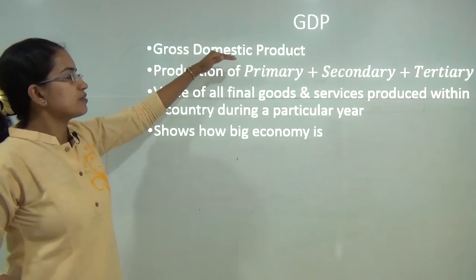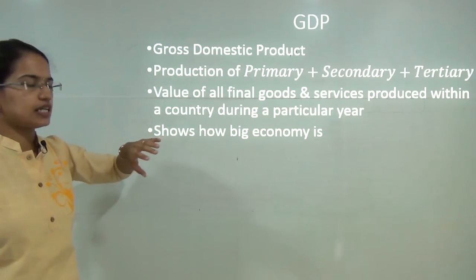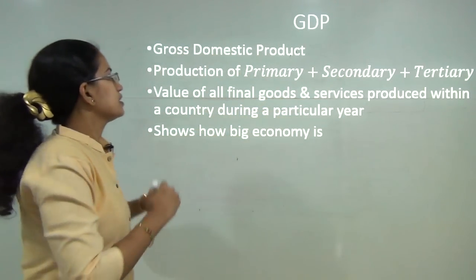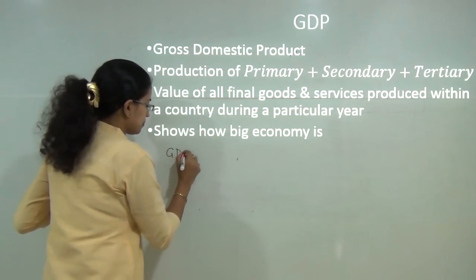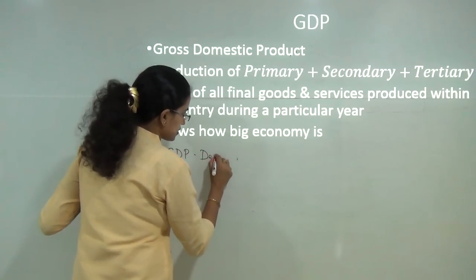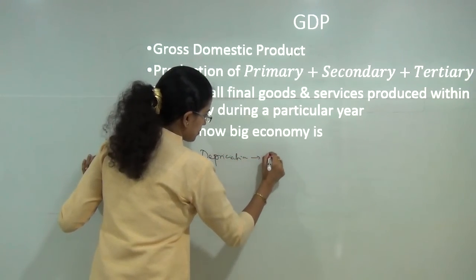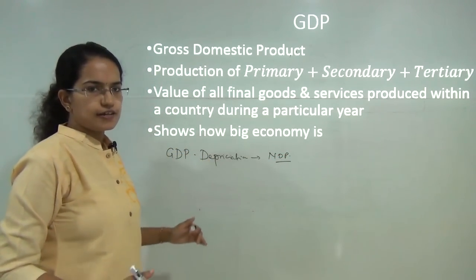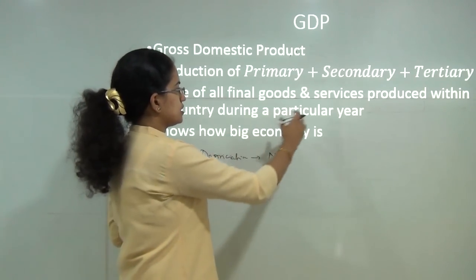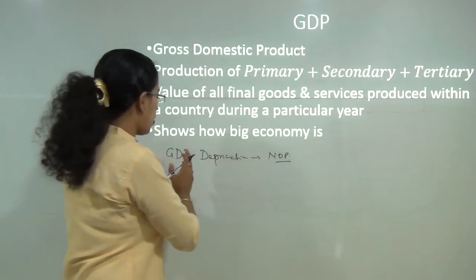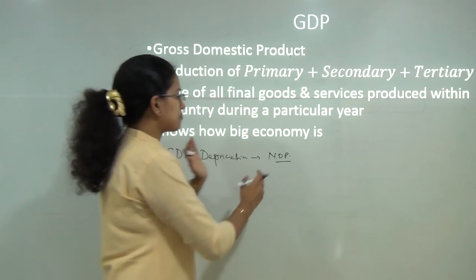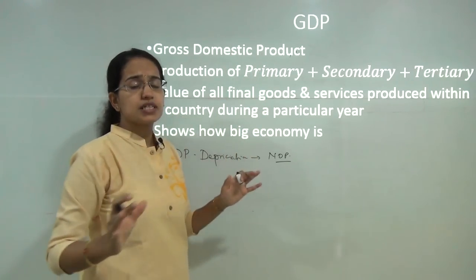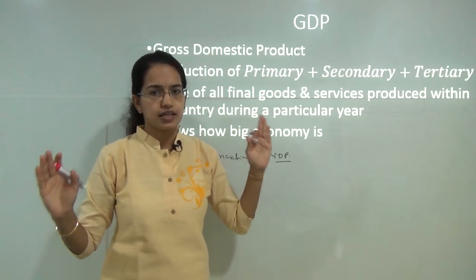When we talk about the Net Domestic Product, it would remove any kind of depreciation from this gross amount. So any kind of losses incurred in the process would be subtracted from the final value of goods and services, and that would lead you to the Net Domestic Product. This GDP helps us understand how big the economy is.